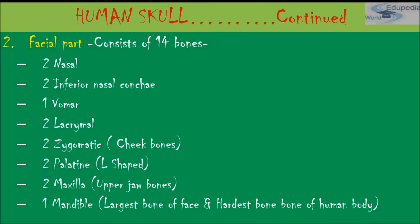The skull consists of cranium, facial bones, hyoid bone, and ear bones. The facial bones consist of 14 bones: 2 nasal bones, 2 inferior nasal conchae, 1 vomer, 2 lacrimal, 2 zygomatic, 2 palatine, 2 maxilla, and 1 mandible. Zygomatic bones are known as cheek bones, maxilla are the upper jaw bones, and the mandible is the lower jaw bone — the hardest and largest bone of the face.